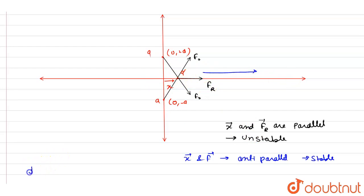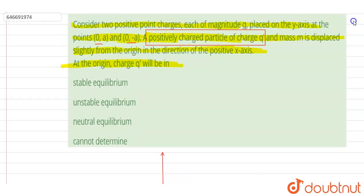So what will happen? It will further... So if you see here, it is unstable equilibrium. Option B is correct. Thank you.